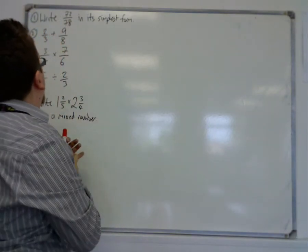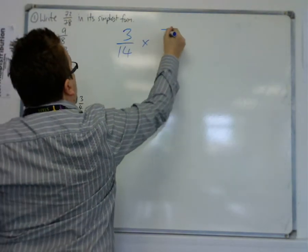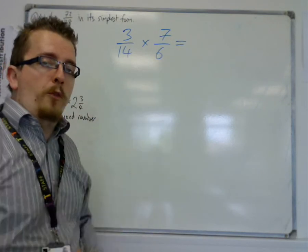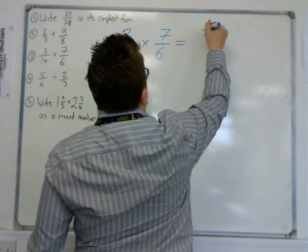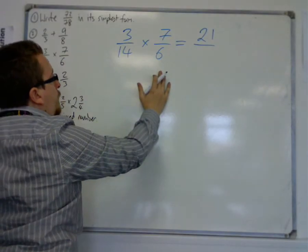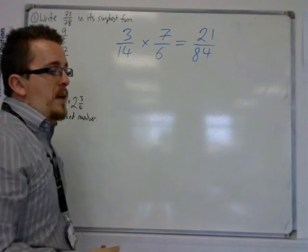Multiplying fractions, like 3 over 14 times 7 over 6, is a nice straightforward process. You just multiply the tops: 3 times 7 is 21. And multiply the bottoms: 14 by 6, so 6, 12, 24, 84. So 21 over 84.